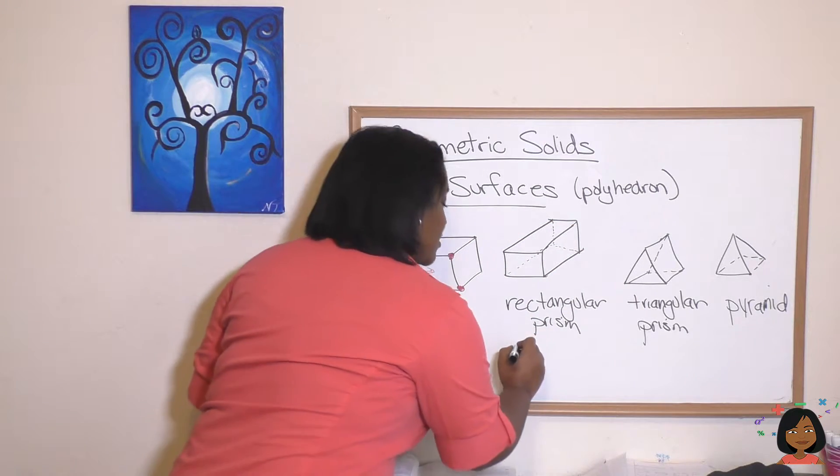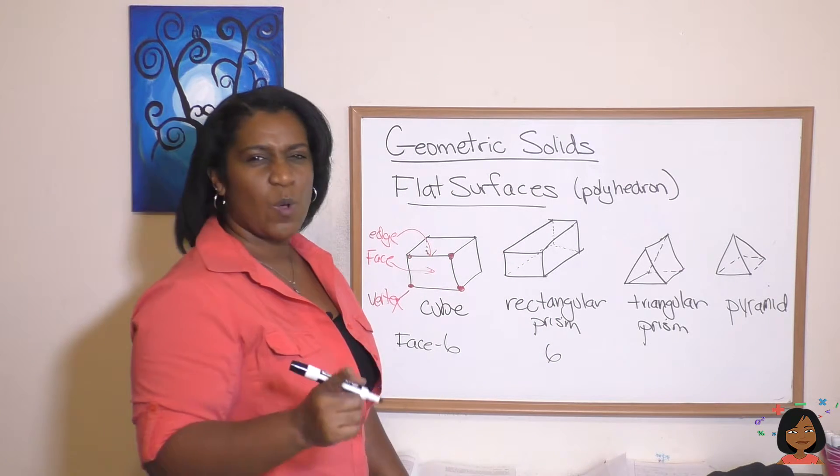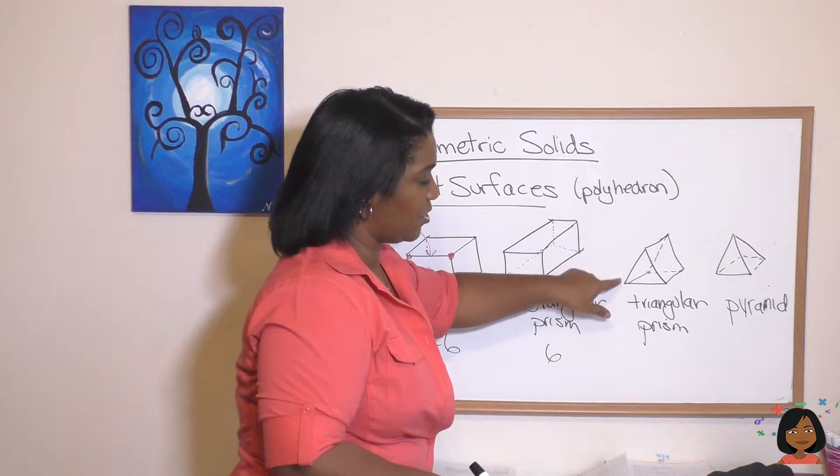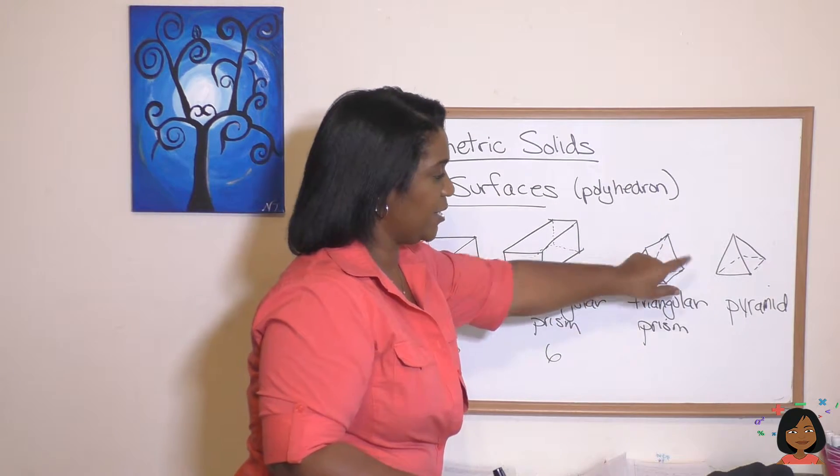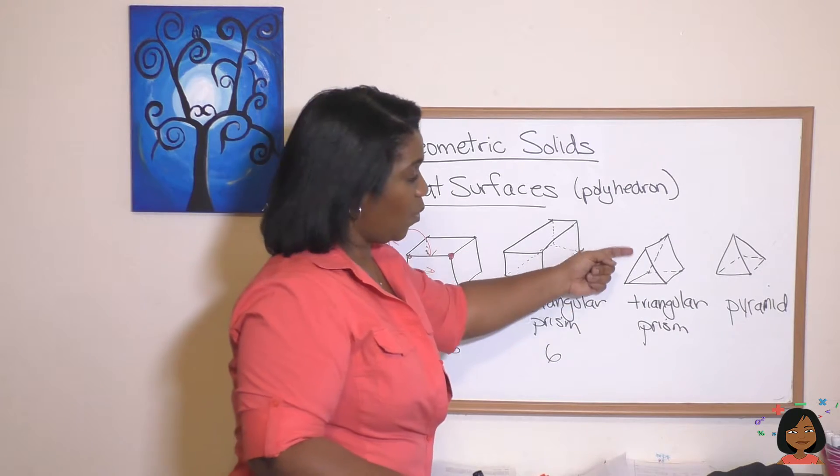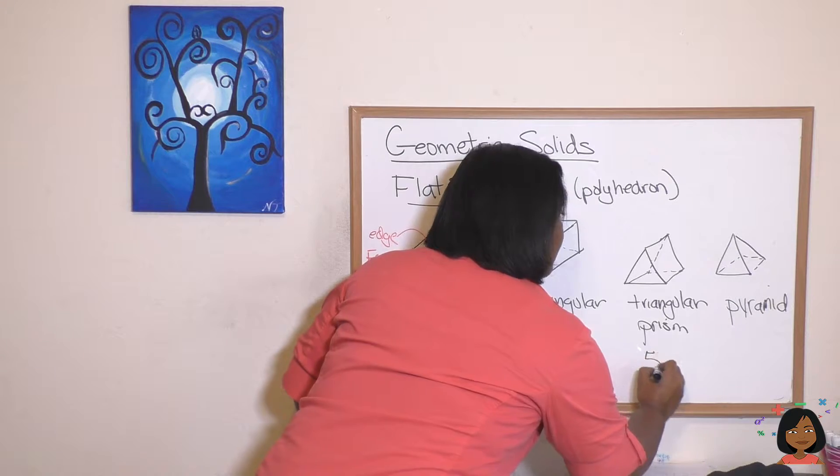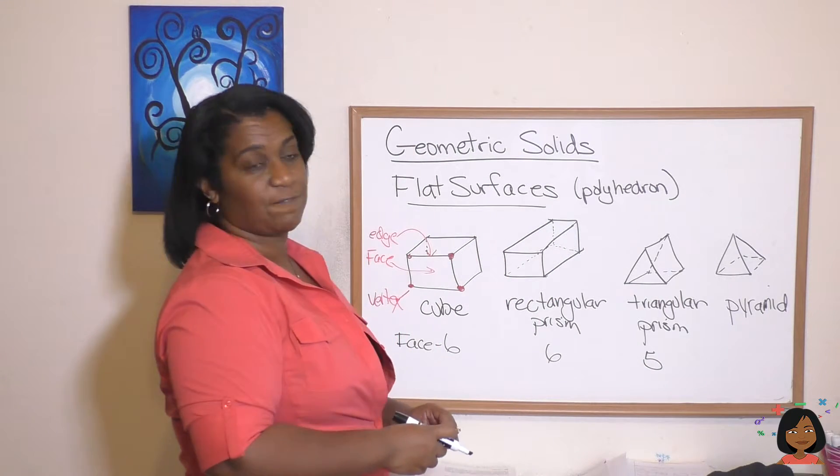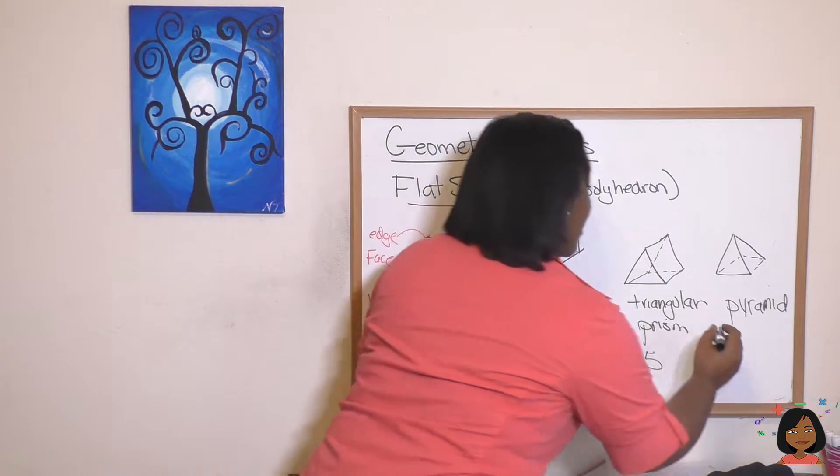What about a triangular prism? Well, its base is a three-sided triangle, so there's a face here and here - one, two - and then one, two, three. That's five. And for a pyramid, how many faces do we have? We've got one, two, three, four, and one on the bottom, which is five.